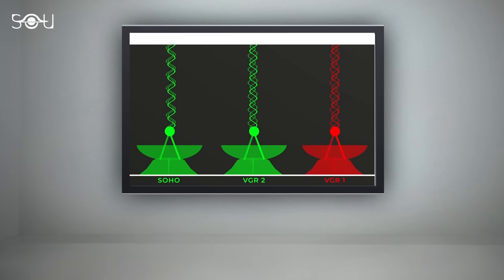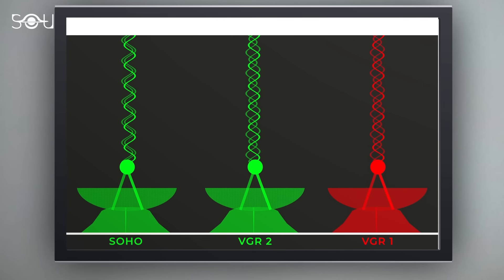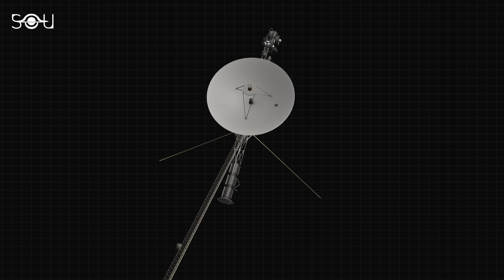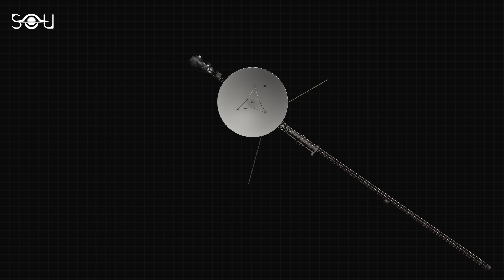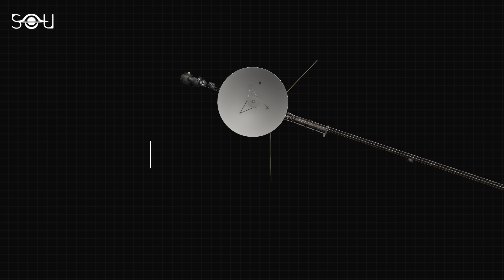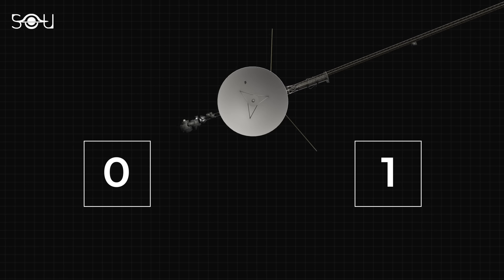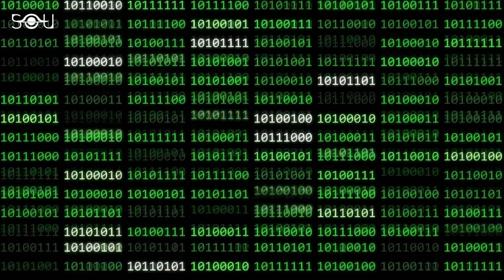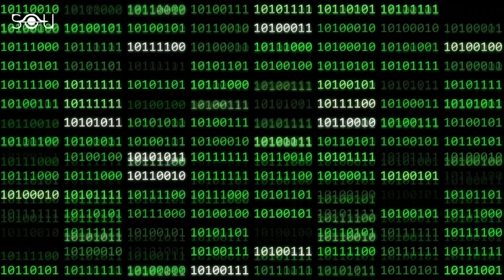To answer all these questions, it's important to understand why the probe is transmitting a strange pattern of binary digits. The Voyager spacecraft, just like computers on Earth, uses the binary system to communicate with us. It employs only two numbers, zero and one, to represent all kinds of information. Each zero or one is referred to as a bit, and a combination of these bits can represent anything from numbers and letters to more complex data like pictures or sounds.